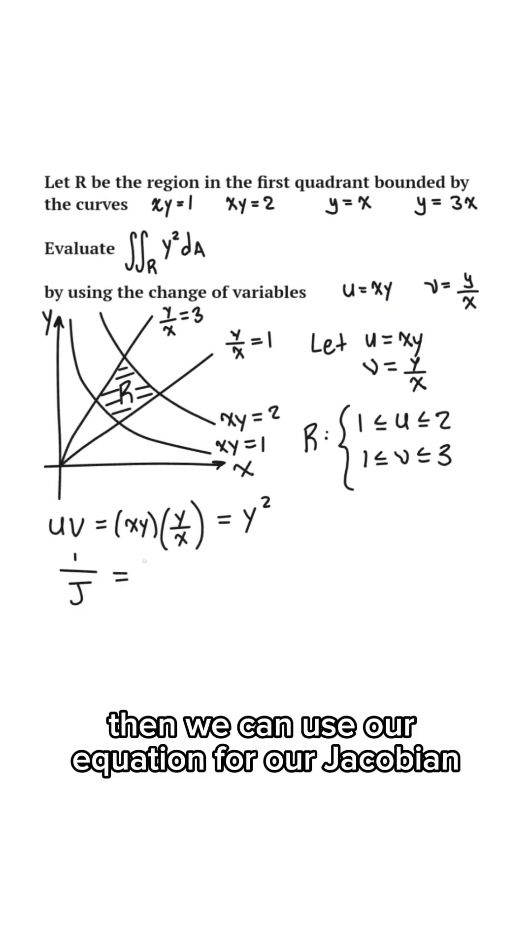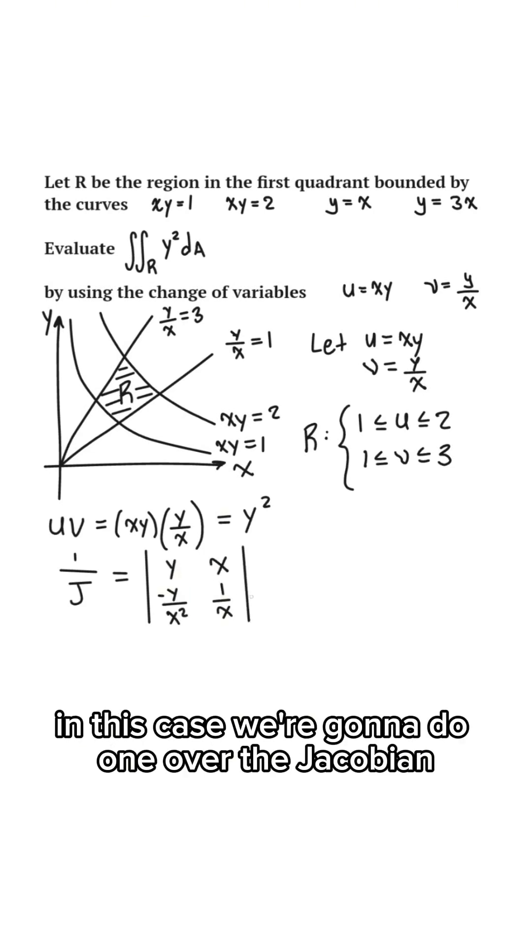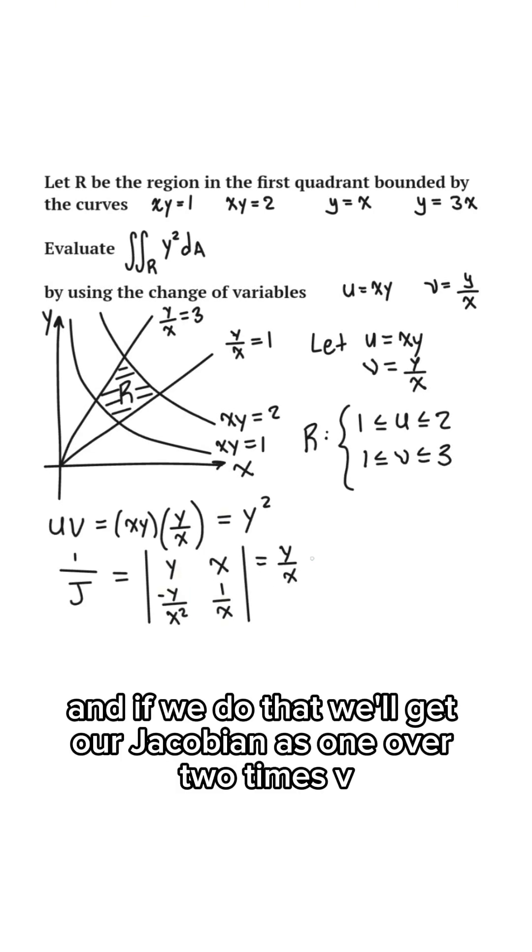Then we can use our equation for our Jacobian. In this case, we're going to do 1 over the Jacobian, and if we do that, we'll get our Jacobian as 1 over 2 times v.